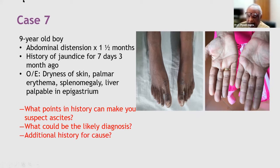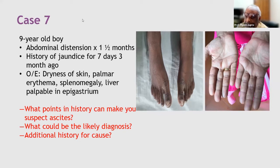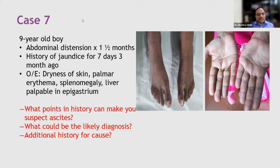Student responses: drug intake, recurrent jaundice, neuro-psychiatric manifestations, upper GI bleeding, history of fever, joint pain, hematemesis, and transfusion history are all suggested as important historical points.